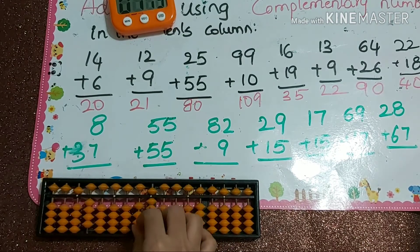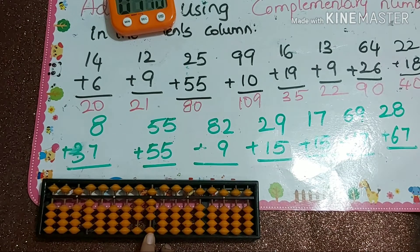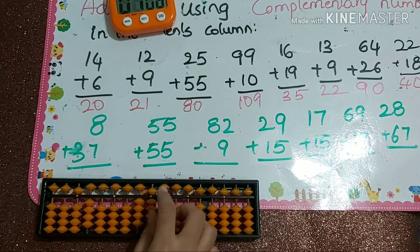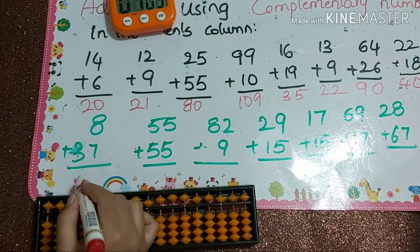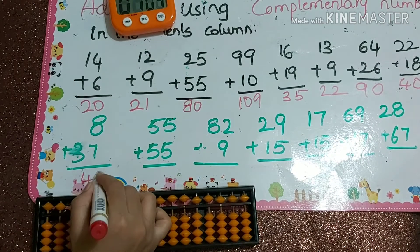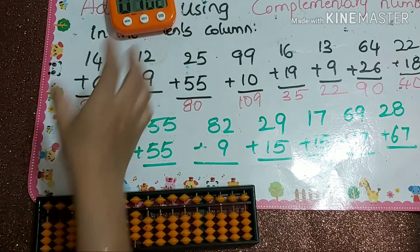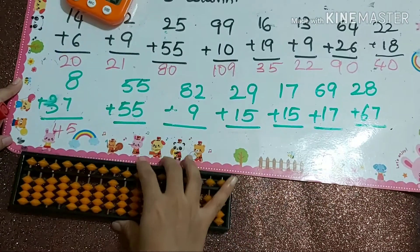We add in the tens place. For 3 and 7 in the ones place, when we can't add directly, we use plus 10 minus 3, so the answer is 45.